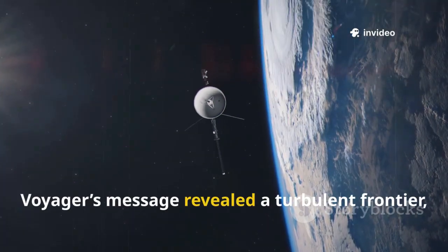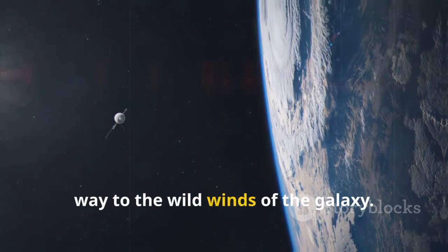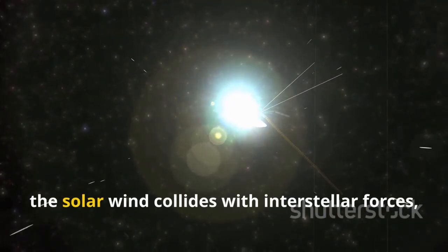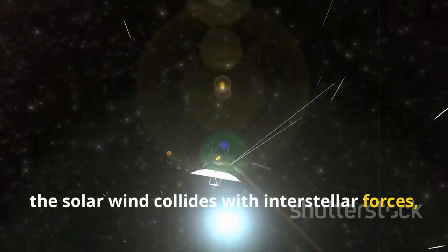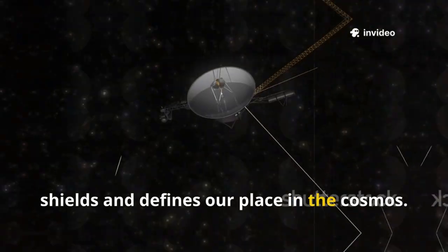Voyager's message revealed a turbulent frontier, where the calm of our solar bubble gives way to the wild winds of the galaxy. Here, the solar wind collides with interstellar forces creating a chaotic boundary that both shields and defines our place in the cosmos.